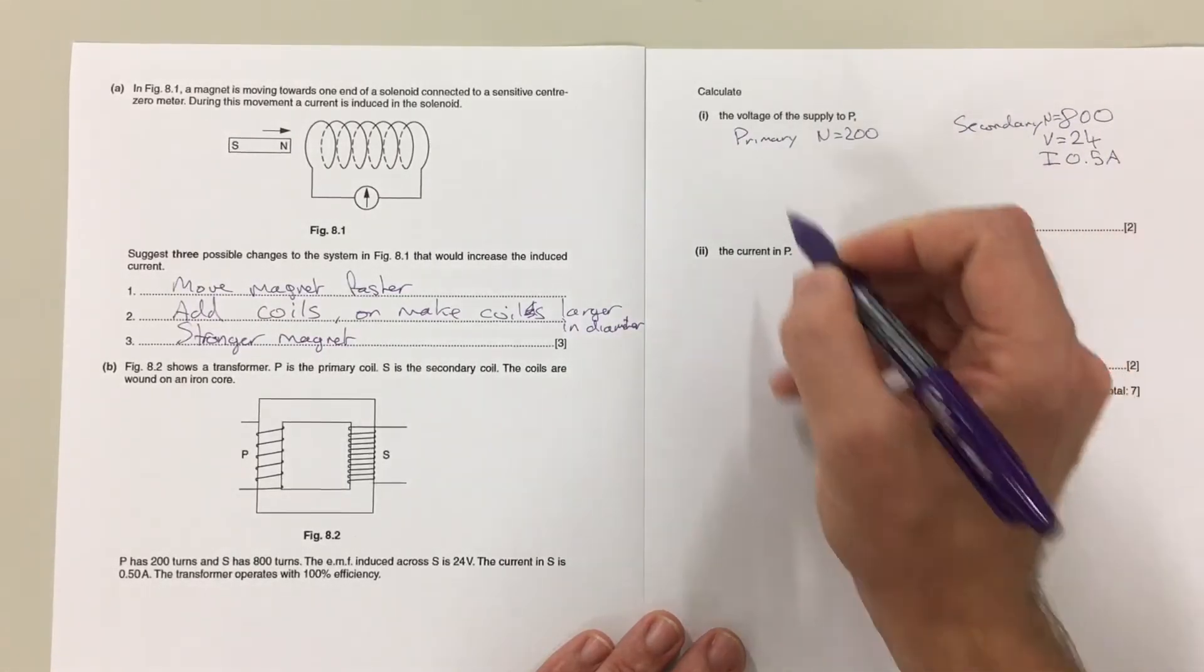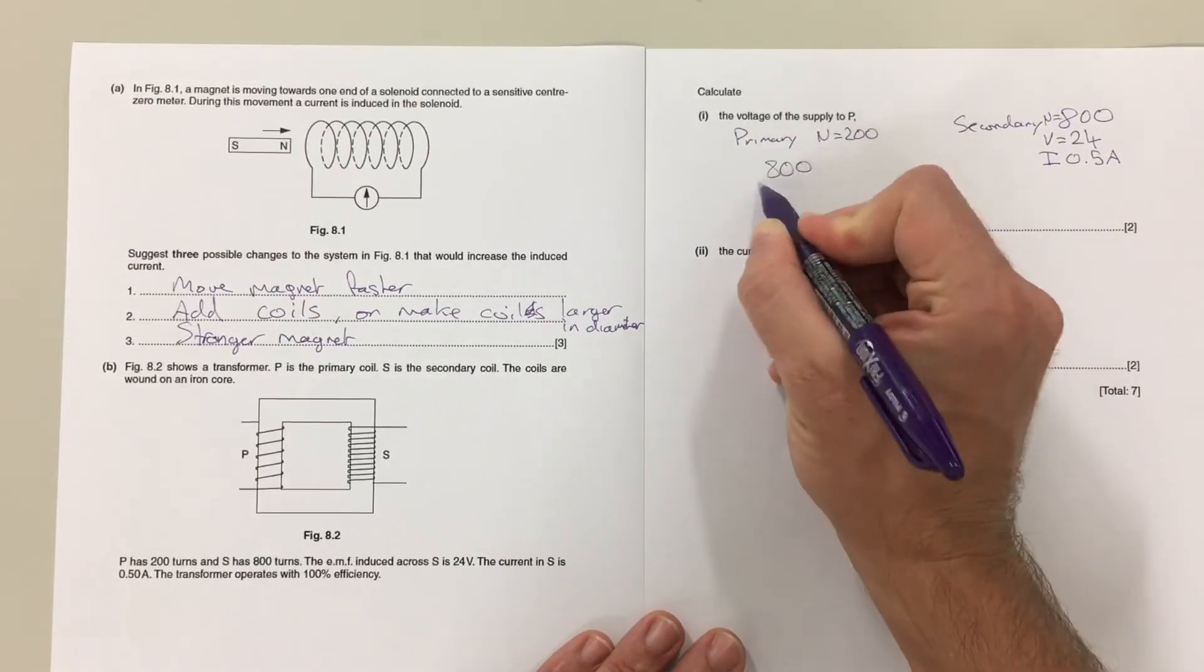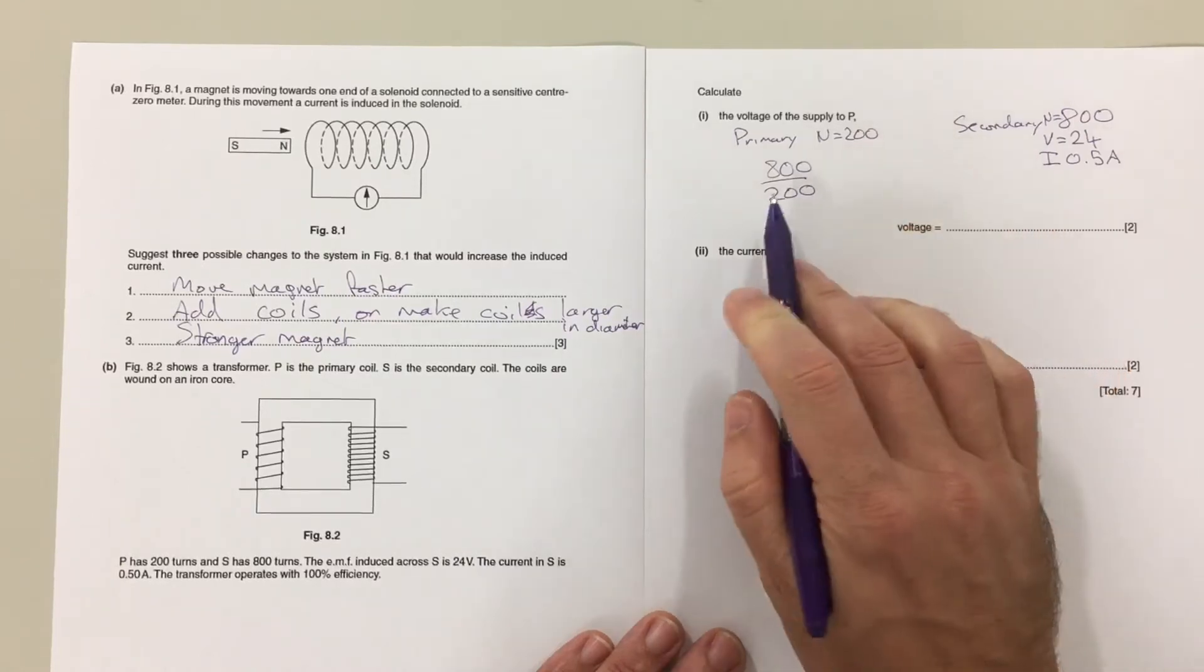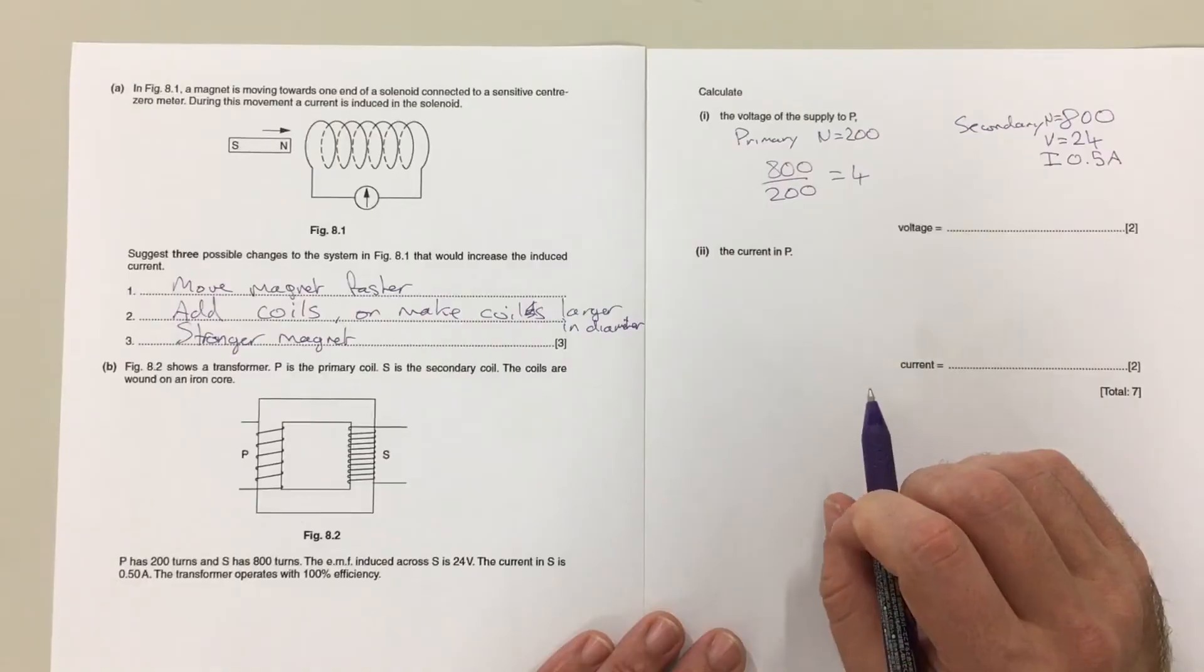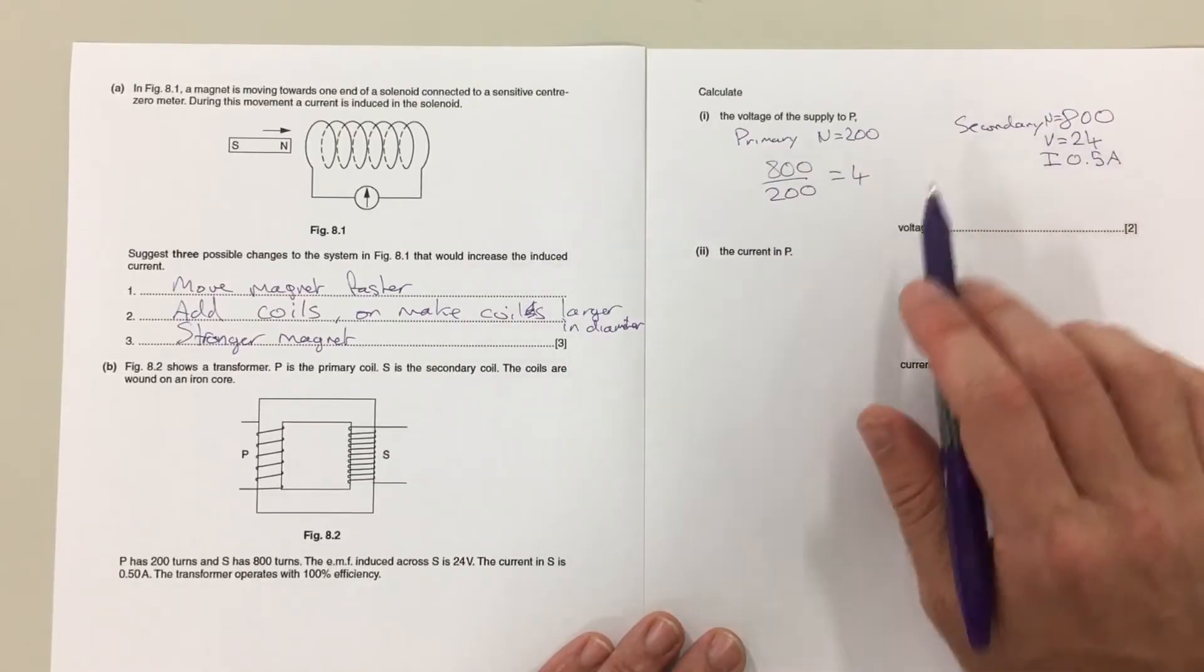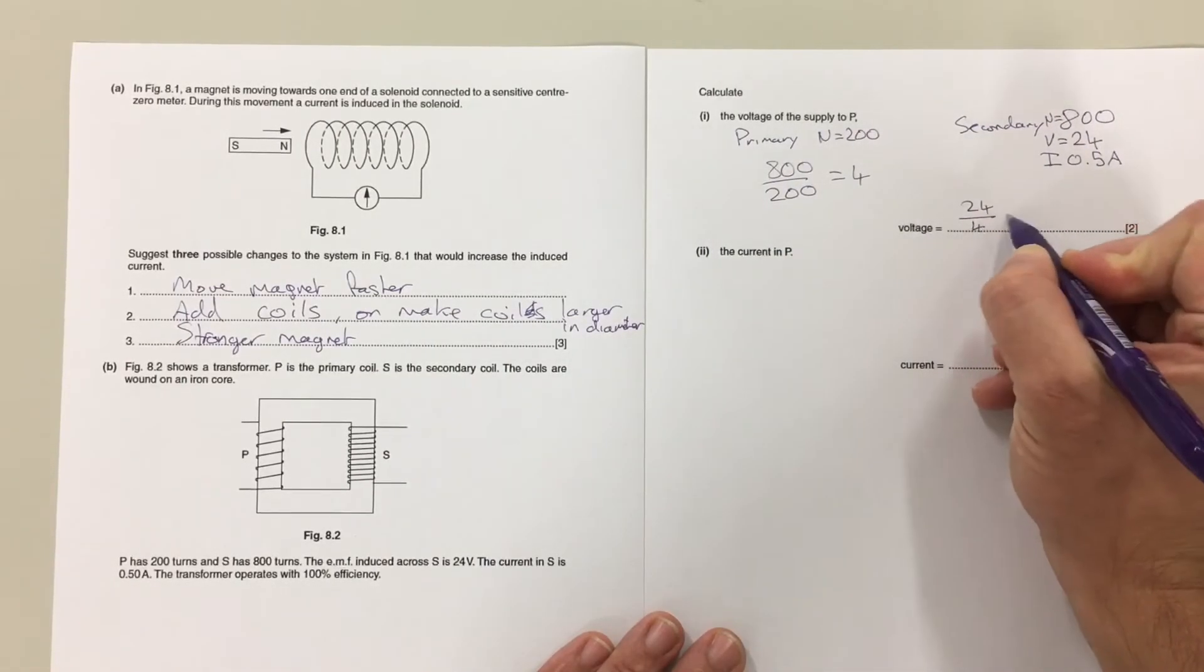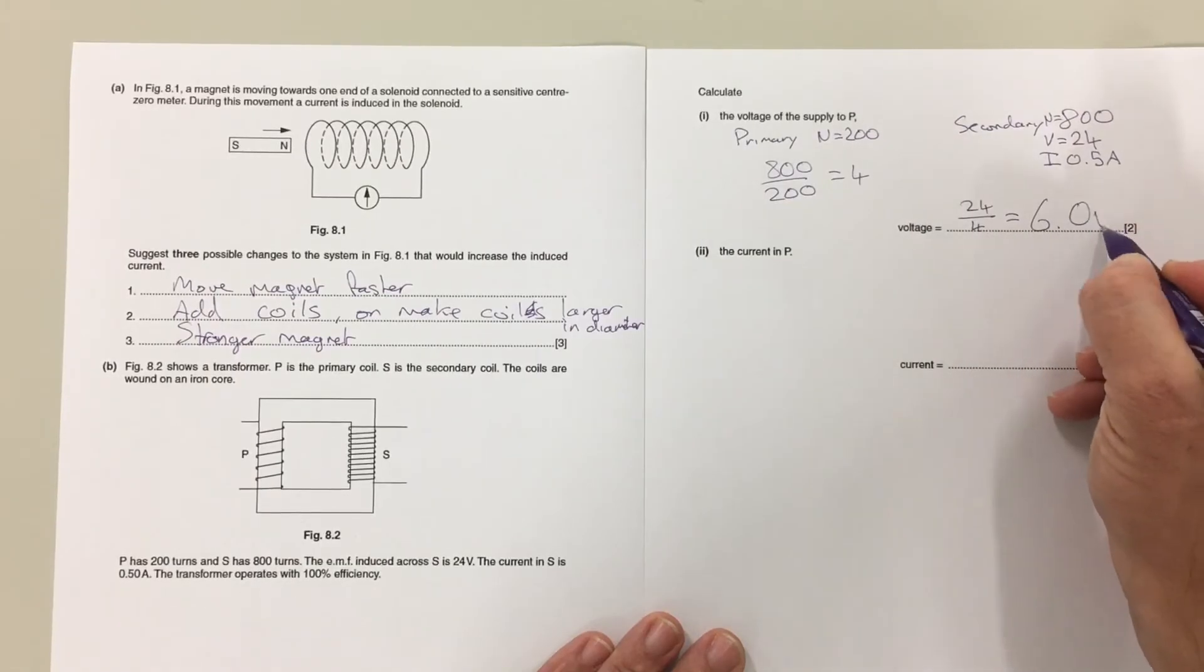So 800 over 200 means that the secondary coil has four times as many turns as the primary so it has four times the voltage. So 24 divided by 4 gives you 6 volts.